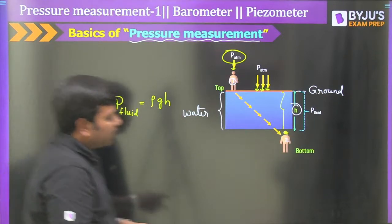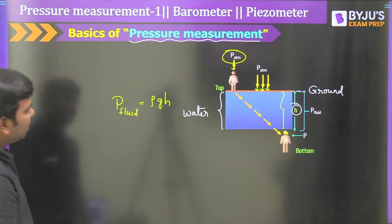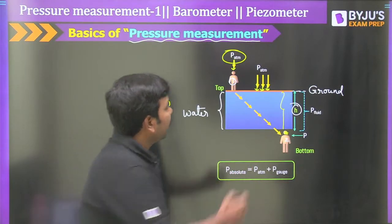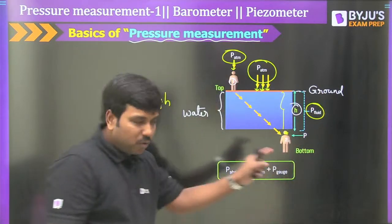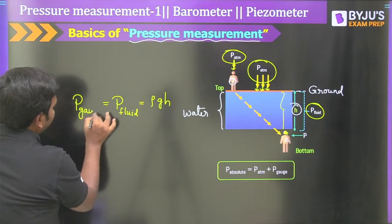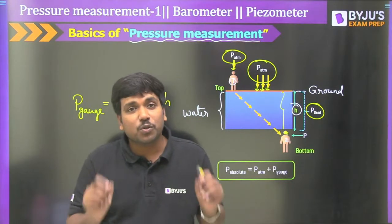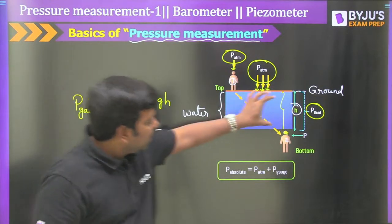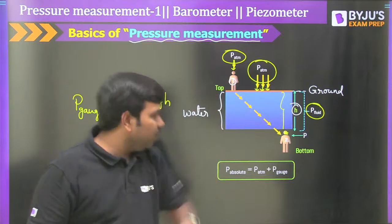The total pressure acting on the second person is called absolute pressure: Absolute pressure = atmospheric pressure + fluid pressure. The pressure offered by the fluid here is considered as gauge pressure. So: atmospheric pressure plus gauge pressure together equals absolute pressure. Most sensors — like manometer or Bourdon tube — give gauge pressure. That's why in interviews they ask how to measure gauge pressure specifically.